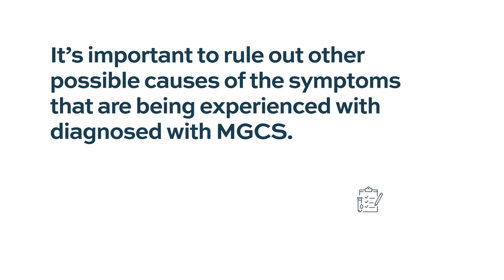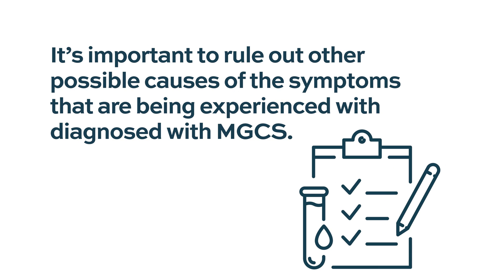What we try to do first is make sure that the problem the patient is having, such as neuropathy, isn't caused by something else, like a history of diabetes, thyroid disease, or low B12 or vitamin D levels. Once we determine that the monoclonal gammopathy is causing the problem and that it's worth treating, we go ahead and treat and see if their symptoms improve.